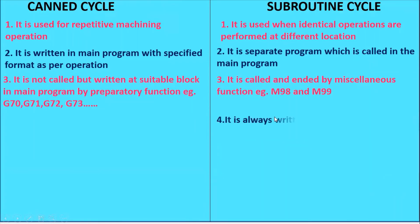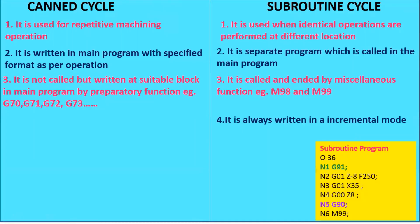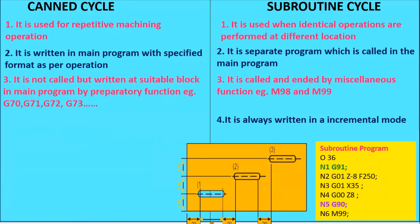Next point in the subroutine: it is always written in incremental mode. This is very important. The subroutine program is written separately using G91, which indicates incremental mode. Why incremental mode? Because the slots are made at different positions and different locations. So you always write the subroutine program in incremental mode, so that when you want to go for the second slot, you can directly call to position two.